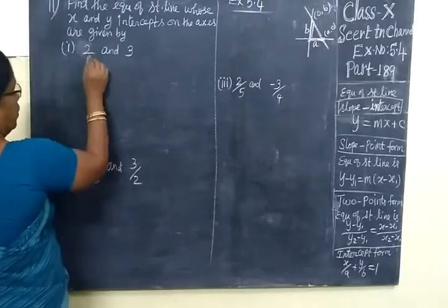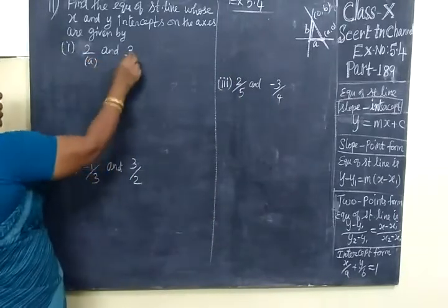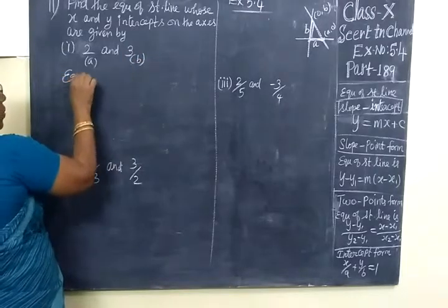So this is A, and this is B. So equation of straight line.